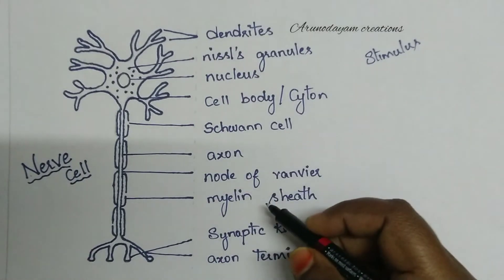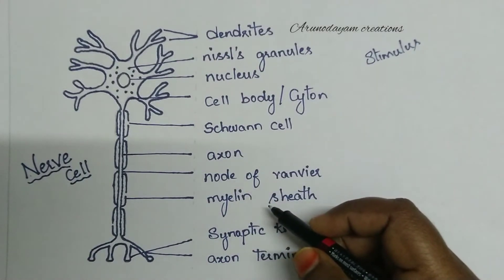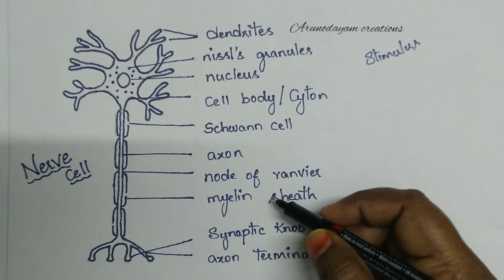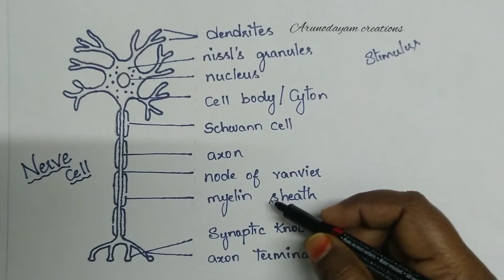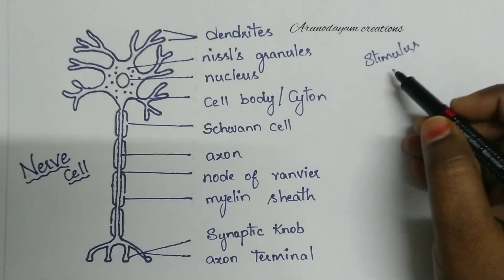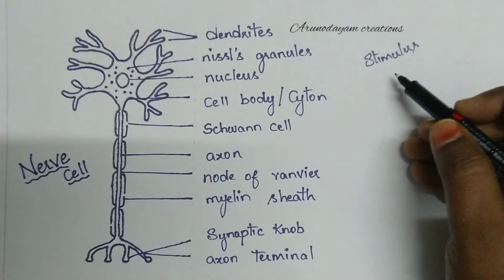This nerve cell is the main component of our nervous system. The nervous system is useful for giving response to a particular stimulus. Stimulus means any change taking place in our surroundings.